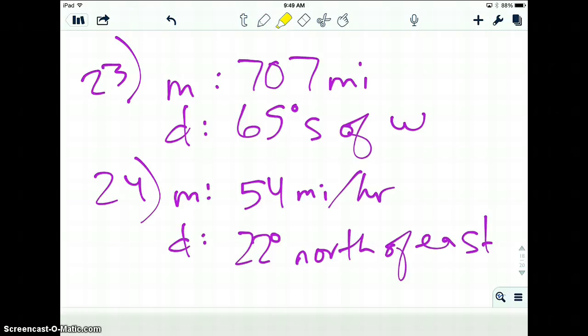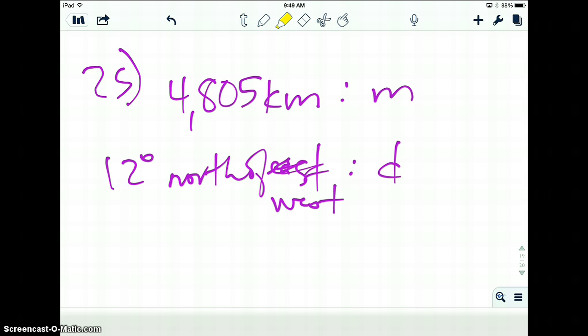Cha-ching! All right, we're going to move and look at 23 through 25, which is the same type of thing that we were just doing in 22, except the picture's already there for you and there's no situation. So I'm going to go ahead and have you try finding the magnitude and direction of each vector there and pause video, because I am just going to be writing out the answers for you. Okay. So, here we have it. 23, you have your magnitude and your direction, south of west. And then at 24, you have 54 miles per hour for the magnitude, 22 degrees north of east for the direction. And for number 25, 4,805 kilometers for the magnitude and 12 degrees north of west.